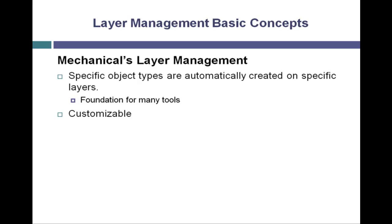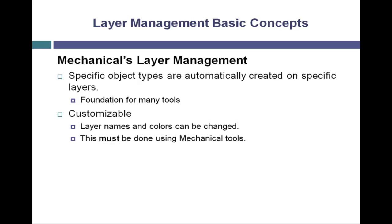The layer properties of these layers can be customized. Layer names and colors can be changed. Line weights and line types can be altered. But you must use the Mechanical tools to do this. If you use traditional AutoCAD layer tools to make changes, Mechanical will ignore these changes. The tools for making these changes are Mechanical's Layer Manager and also the Object Properties Settings dialog box.